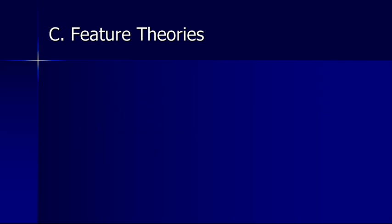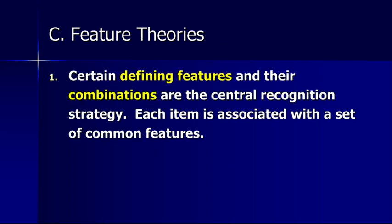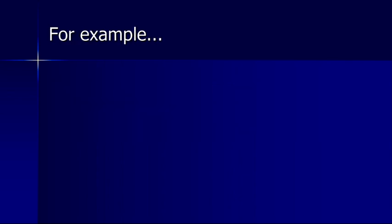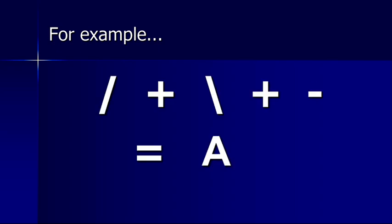We'll move on to talk about feature theories, or what are often called feature detection theories. According to this kind of theory, certain defining features and their combinations are the central recognition strategy, and each item is then associated with a set of common features. Rather than identifying the entire object holistically, we're identifying individual features and the way in which they're combined. So we take the parts, put them together, and recognize items in that particular way. For example, we might take individual features and come up with the letter A, and then any variation of those features can still be recognized as the letter A.